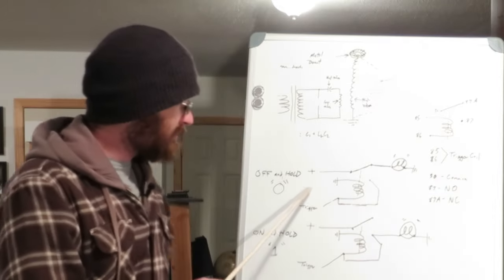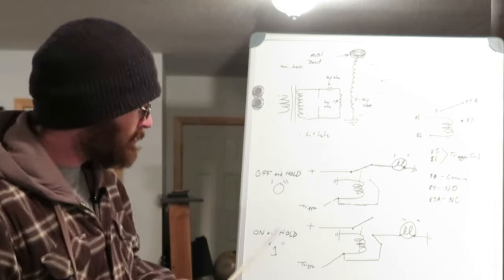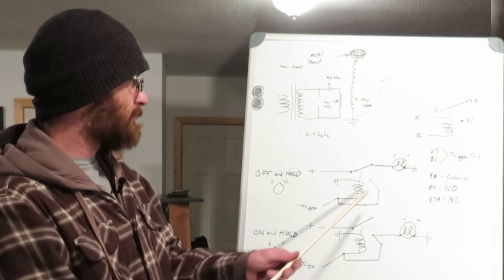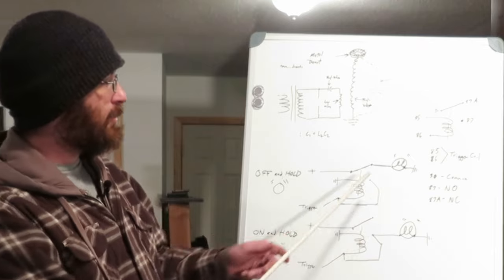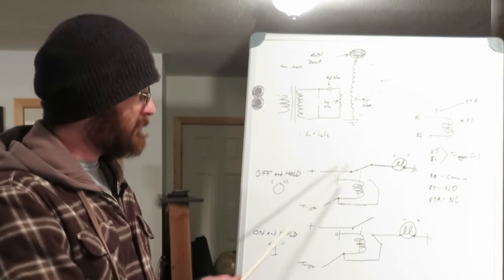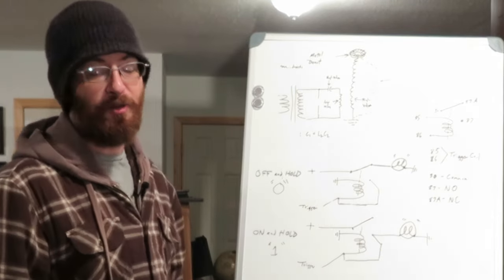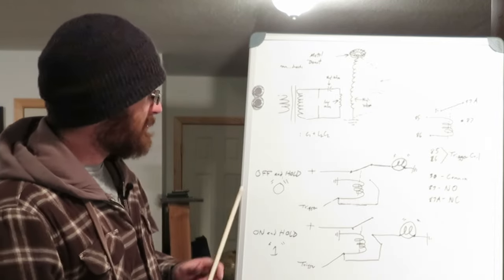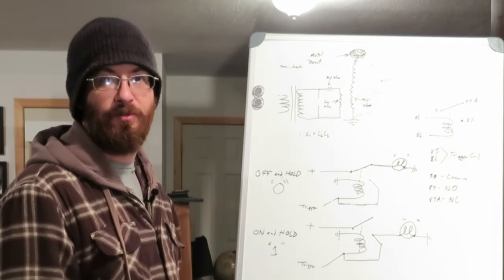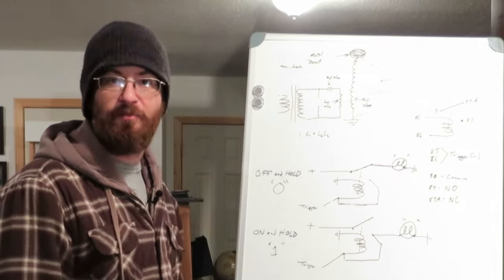This first setup here basically stores a zero, or it turns off. It turns the light off and the relay holds the relay off, which holds the light off. So I call this an off and hold relay for lack of better terminology.